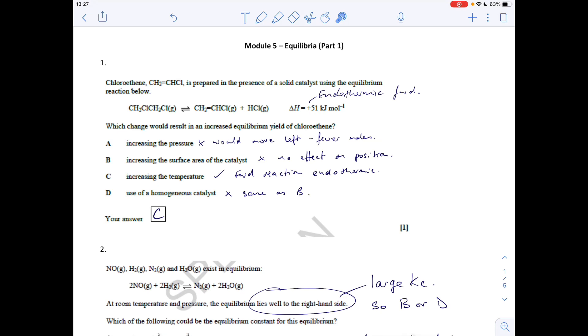Question one: which change would result in an increased equilibrium yield of chloroethane? We want the equilibrium to go to the right hand side. Increasing the pressure wouldn't do it because it would move backwards - there's fewer moles on the left hand side. Increasing the surface area of a catalyst wouldn't have any effect on the position. Catalysts don't affect position of equilibrium, so D is wrong as well.